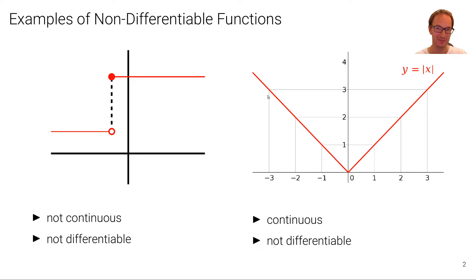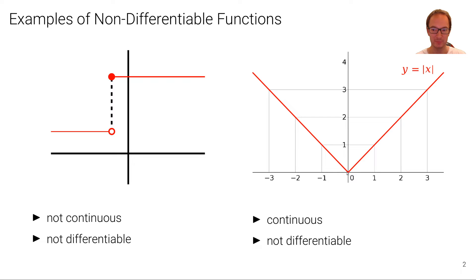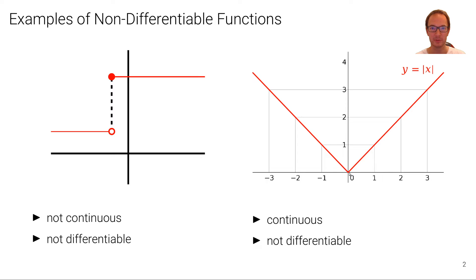Here's another example: the L1 norm, the absolute value function y equals |x|. In this case, the function is actually continuous, but it's not differentiable at the particular location at zero. It's differentiable everywhere else, just not differentiable at zero. Because if we take the limit from the left, we have a derivative of minus one, and if we take the limit from the right-hand side, we have a derivative of plus one — a positive slope.